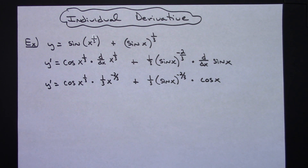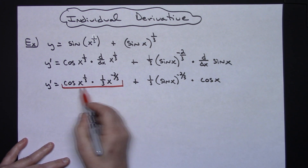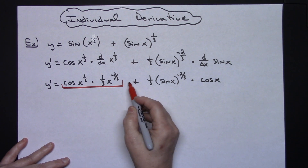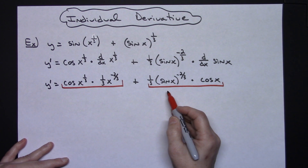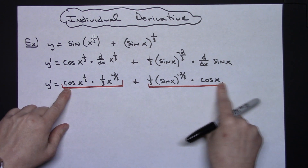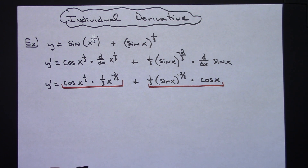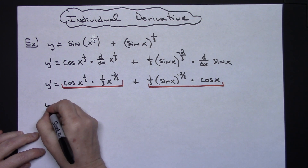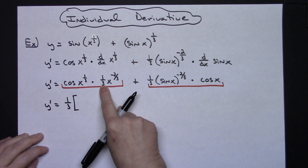Now I'm going to clean this answer up. I have two terms — each is a product — separated by a plus sign. I'm going to look for a greatest common factor. Looking through this, I have a GCF of 1/3rd, so I'm going to pull a 1/3rd out in front: y prime equals 1/3rd times the rest.